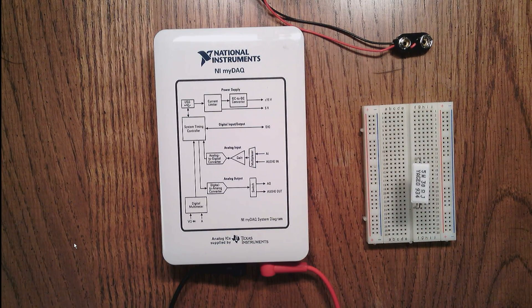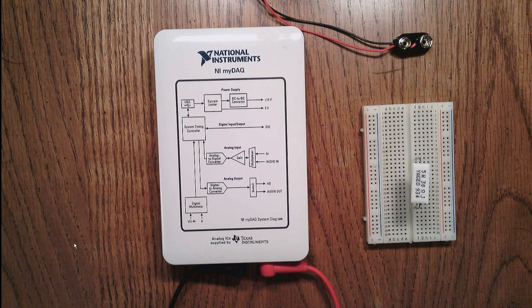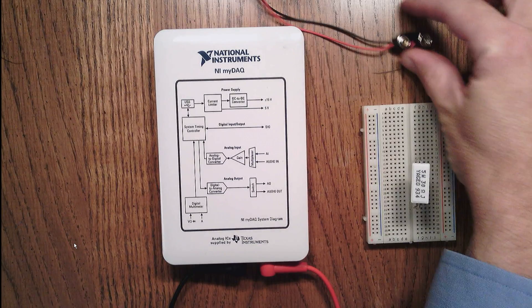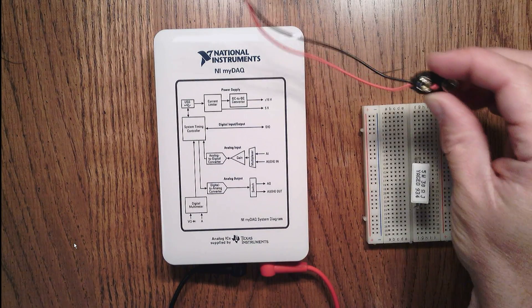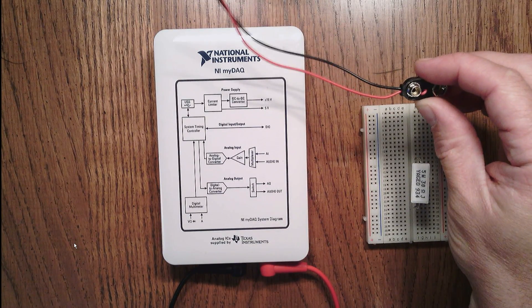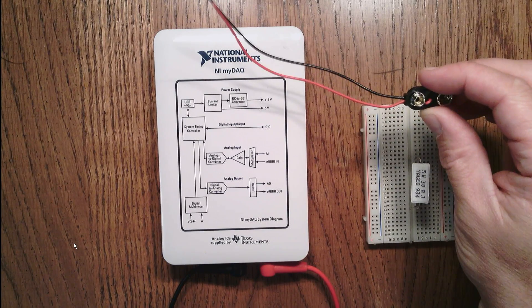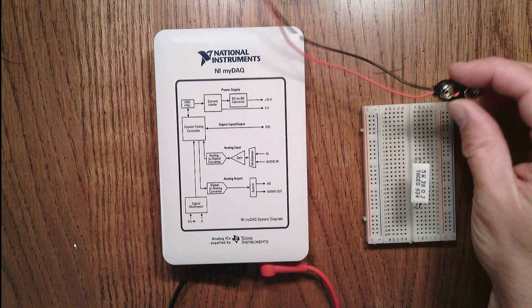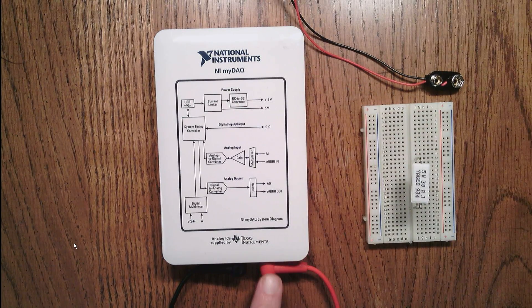With my test leads now configured, I'm going to situate my test leads so that I can measure the current that's going to be delivered from the battery. Remember that for current measurements, we need to measure the current in series. So I'm going to take the high side of the battery output and connect it to the high side input of my ammeter.